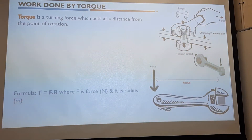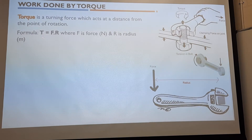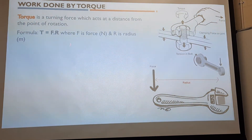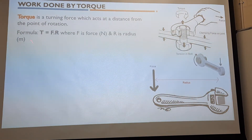How do we calculate torque? We calculate torque using the formula: torque is force times radius. And that formula is not on the formula sheet, so just make sure that you remember it. Torque is force times radius, where force is in newtons and radius is in meters. So if the radius is given in millimeters or centimeters, you must first convert it to meters before you can do your calculations.